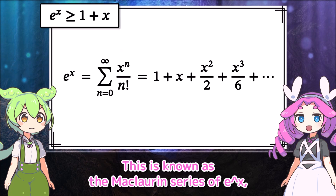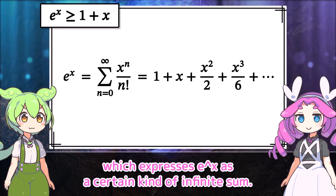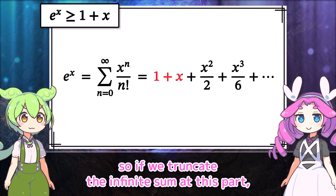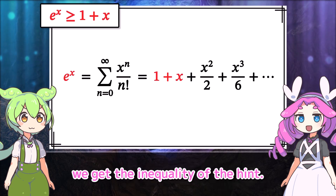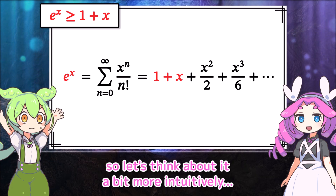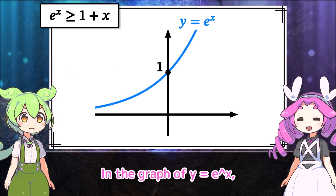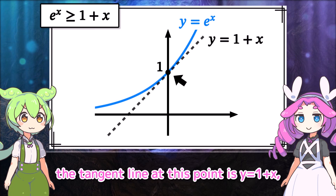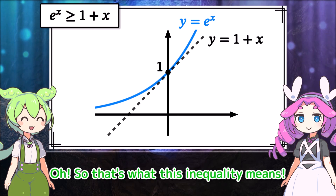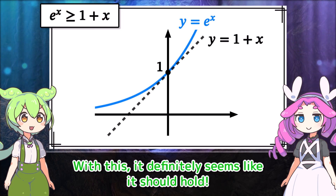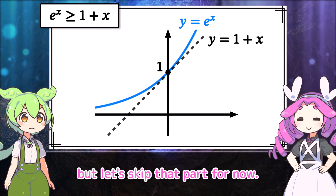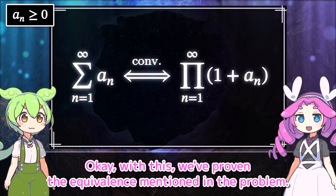But how do we prove this inequality of the hint? Leave that to me. This is known as the Maclaurin series of e to the x, which expresses e to the x as a certain kind of infinite sum. In particular, we're considering x to be non-negative now. So if we truncate the infinite sum at this part, we get the inequality of the hint. In the graph of y equals e to the x, the tangent line at x = 0 is y equals 1 plus x. As you can see from this diagram, this inequality always holds. You can rigorously prove it by evaluating the difference in the values of the two functions, but let's skip that part for now. With this, we've proven the equivalence mentioned in the problem.